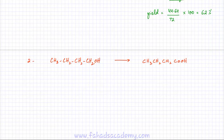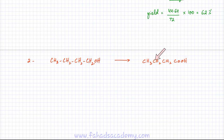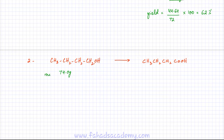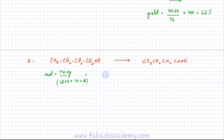Now looking at option 2: 74 grams of butan-1-ol is getting converted into butanoic acid. According to the equation, the ratio is 1:1, so 1 mole of butan-1-ol produces 1 mole of butanoic acid. Given 74 grams of butan-1-ol: moles = 74 ÷ (12×4 + 10 hydrogens + 16) = 74 ÷ 74 = 1 mole.